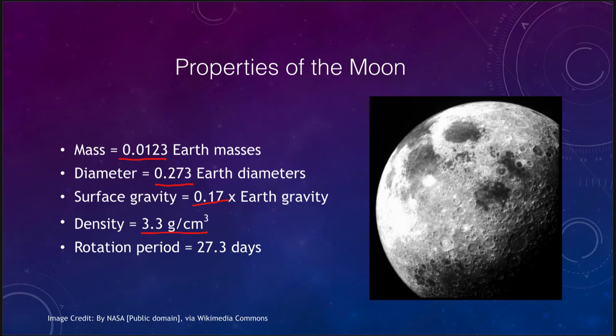The density of the moon is also a lot less than the earth. The earth is about 5 grams per cubic centimeter, while the density of the moon is about 3.3 grams per cubic centimeter, meaning it has a higher concentration of rock and a lower concentration of metals than the earth. Its rotational period is 27.3 days — that is how long it takes the moon to spin on its axis, and also how long it takes to orbit once around the earth, which is why one side of the moon always faces the earth.